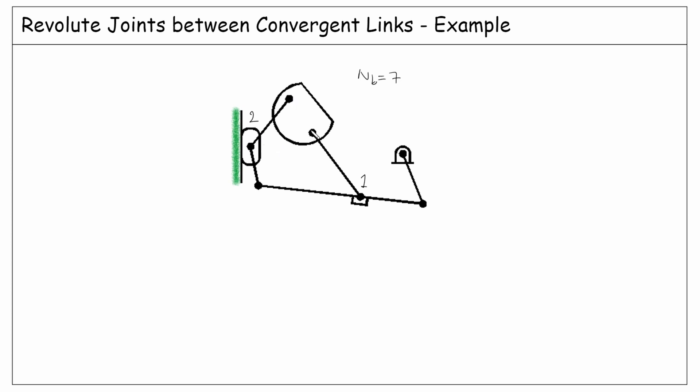So eight revolute joints in total plus one prismatic joint here. Therefore j1 is nine and the degrees of freedom is three times seven minus two times nine, which is three.